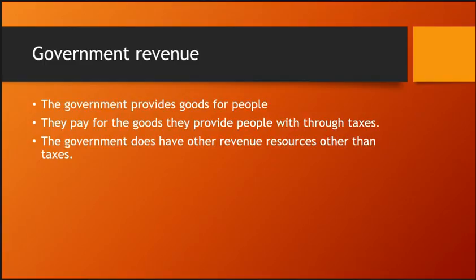The government provides goods and services for people — roads and parks are public goods built by the government. You're sitting in school, and that's a service the government pays for, generated through tax dollars. They also provide services like the fire department. Obviously things like those need to be paid for, and the way they do it is through taxes.